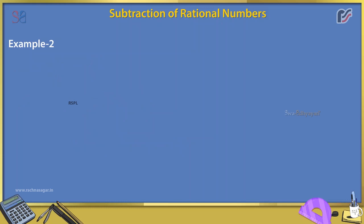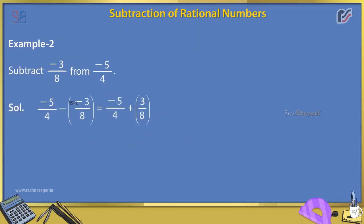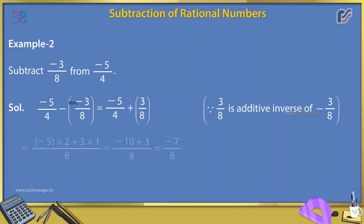Example 2: Subtract -3/8 from -5/4. Solution: -5/4 - (-3/8) = -5/4 + 3/8, because 3/8 is the additive inverse of -3/8. This equals ((-5 × 2) + (3 × 1))/8 = (-10 + 3)/8 = -7/8.